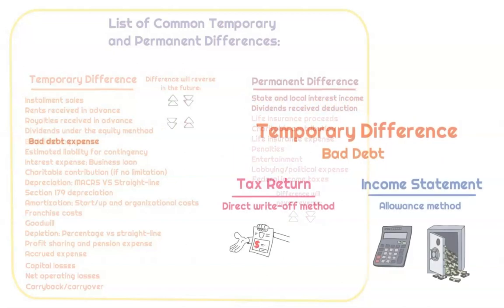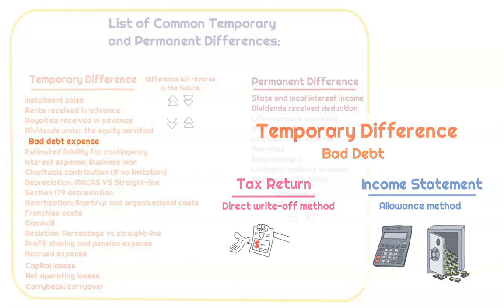Bad debt expense is going to be reported under the allowance method — we project this based on a percentage of ending balances of accounts receivable. Whereas on the tax return, we apply the direct write-off method. It's eventually going to be recognized, so that's why it's a temporary difference.